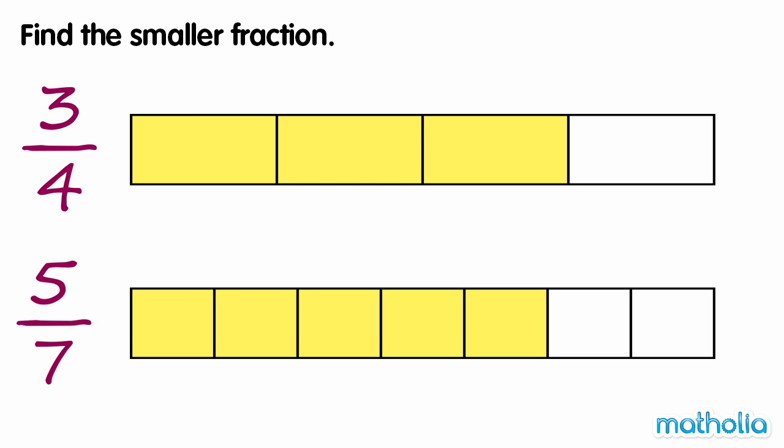We can see that the rectangle showing five-sevenths is less coloured than the rectangle showing three-quarters. So five-sevenths is the smaller fraction.